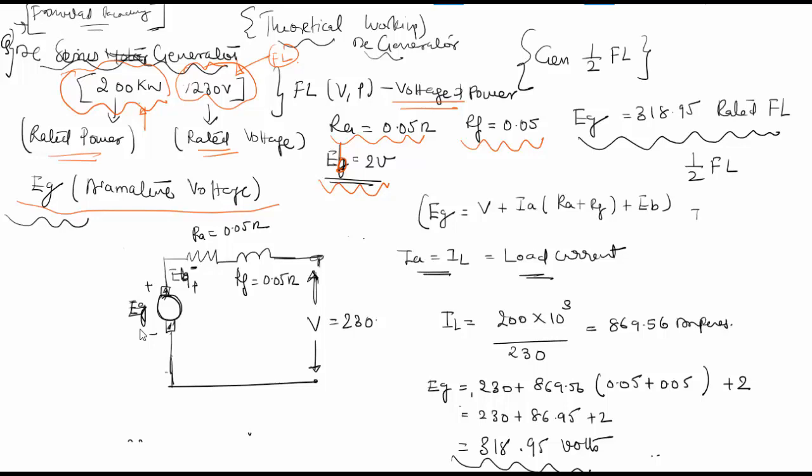Then the current IL will equal IL by 2, which will be 869.56 divided by 2. In such case, you will have to find the voltage generated based on the load current divided by 2. This gives 869.56 divided by 2, which equals 434.78 amperes.